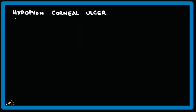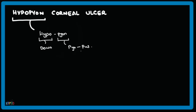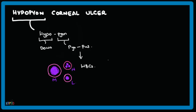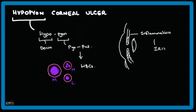In this video, we will discuss about hypopion corneal ulcer. Hypopion means 'hypo' meaning below or down, and 'pion' meaning pus. It consists of WBCs which include neutrophils, macrophages, and lymphocytes. In case of an inflammation of the iris, that is iritis, the blood vessels in the iris and the surrounding ciliary region release these WBCs into the anterior chamber. This is what forms the hypopion.